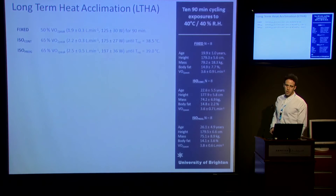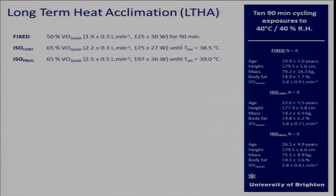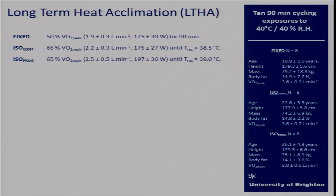Long-term heat acclimation was ten 90-minute exposures — an additional five sessions. Fixed participants continued with their fixed workload. The ISO continuous group continued targeting 38.5°C, and the ISO progressive group, for the final five sessions, targeted an increased rectal temperature of 39°C. Again, no distinct differences between the groups.